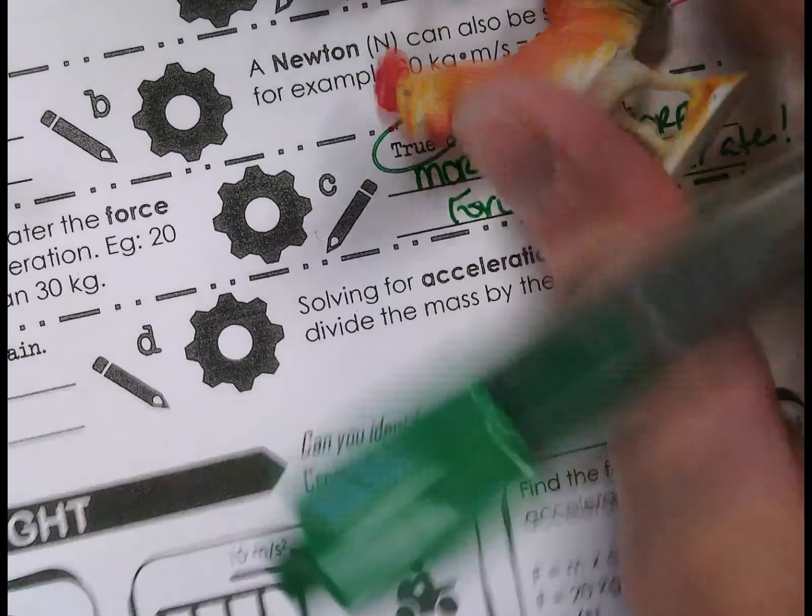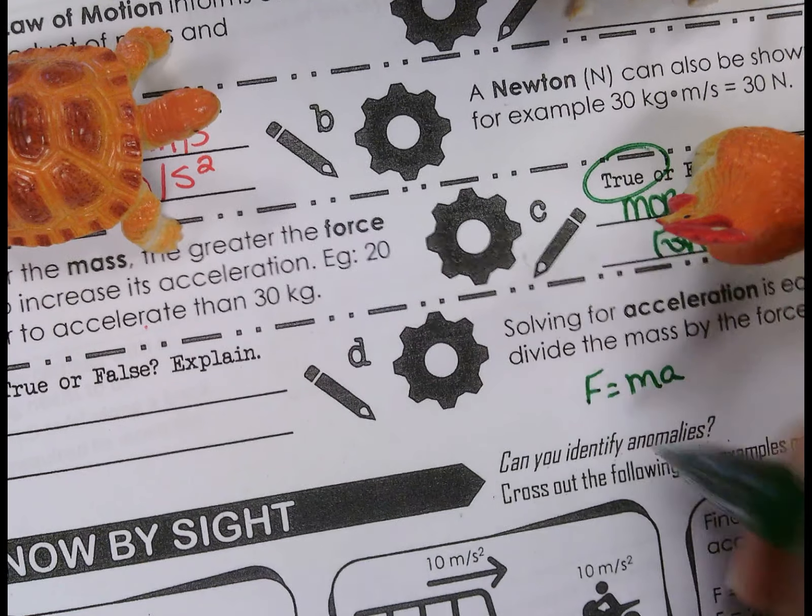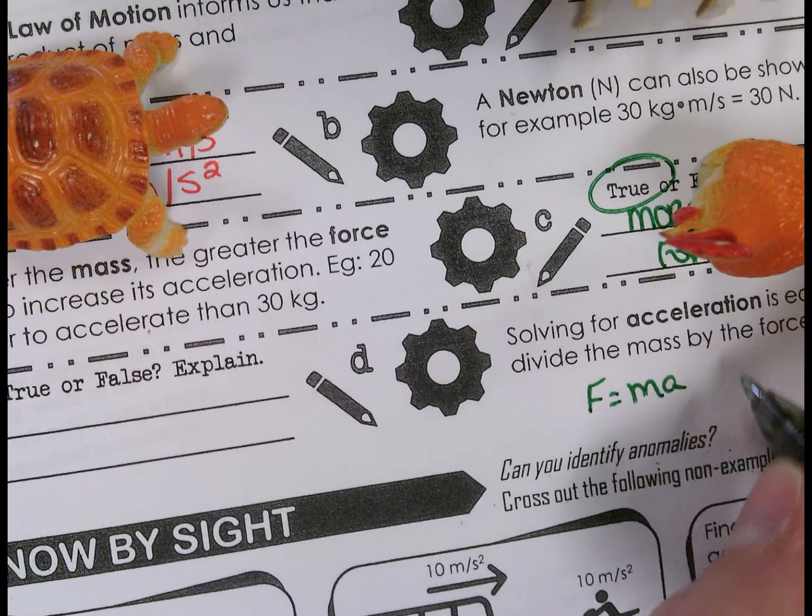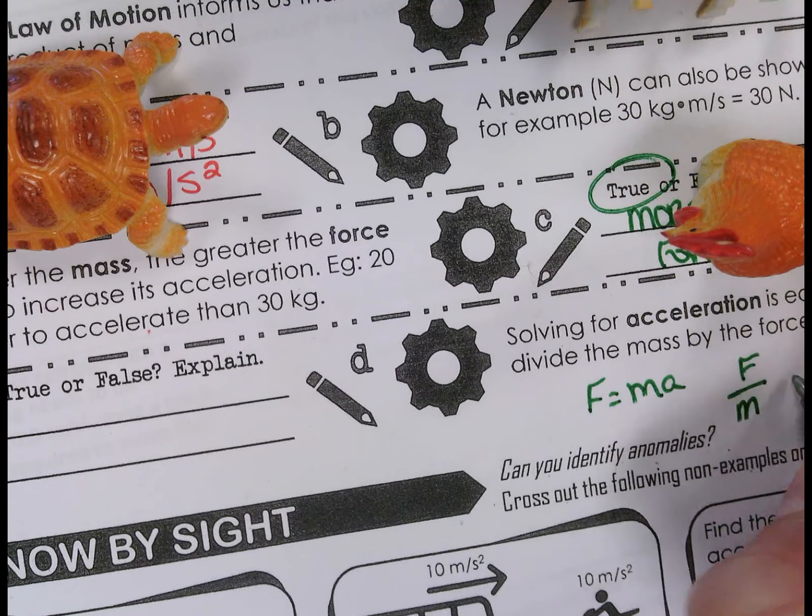So solving for acceleration is easy. Simply divide the mass by the force. So if you know that F equals M times A, and you're trying to solve for acceleration, mass divided by force. Now if you, to get acceleration by itself, you're going to have to do F divided by M equals A. So no, that is incorrect. Force divided by mass equals acceleration. So it's not mass divided by force, it's force divided by mass to get acceleration.